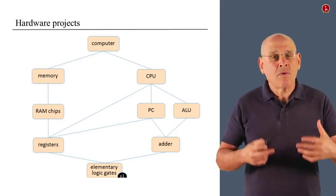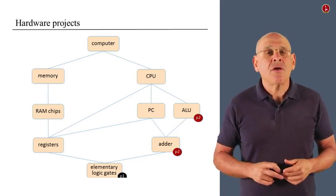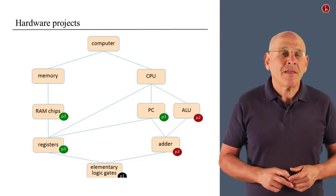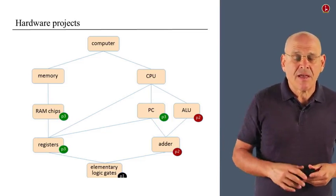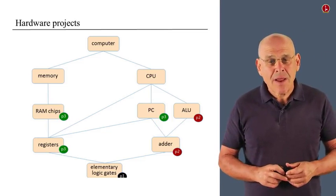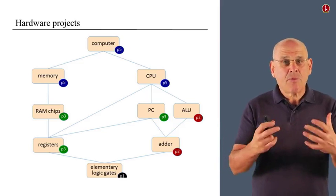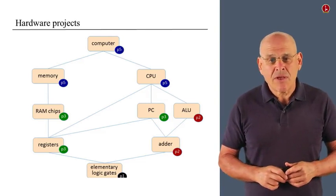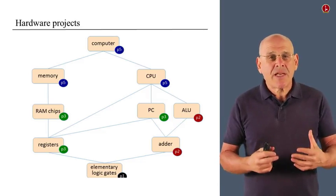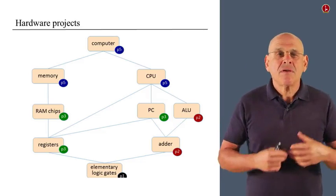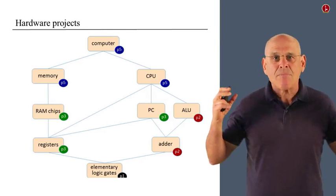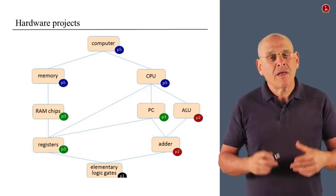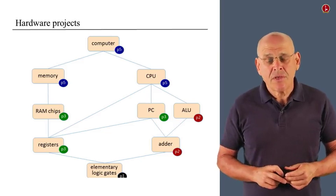Now, if we look at what I've just described bottom up, then in project one, we built the elementary logic gates. In project two, we built a family of adders that led up to the ALU. In project three, we built a family of registers that ended up with RAM units. And finally, in this project, we are going to take the fruits of all this hard work and put it together into a complete computer system.